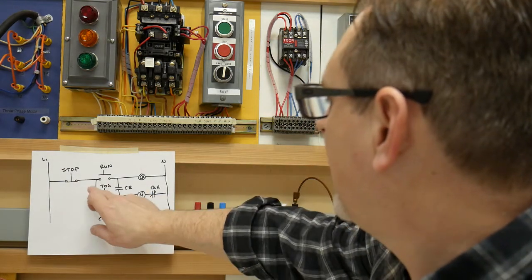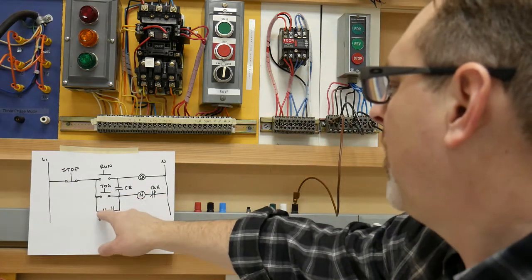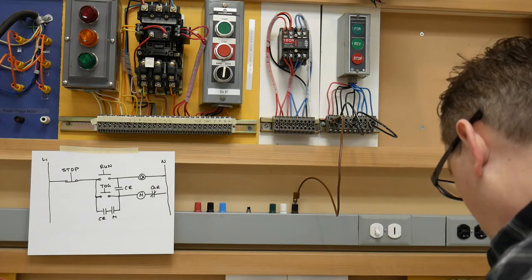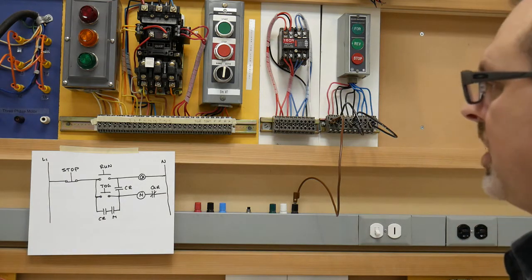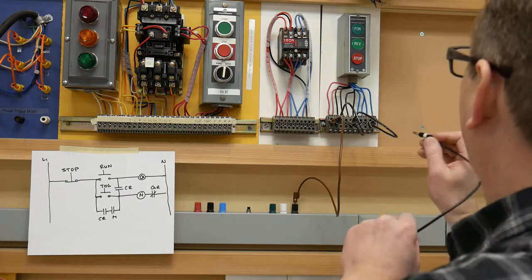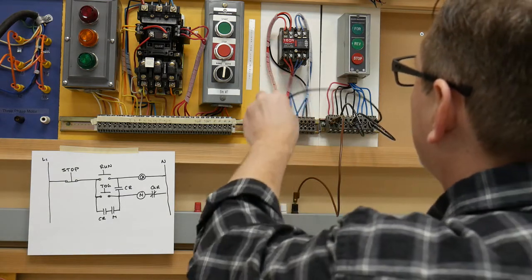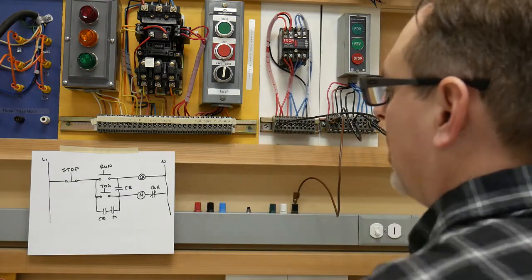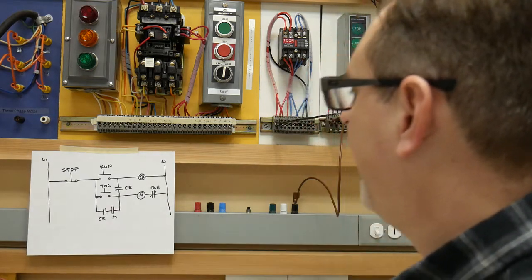So now I've got this wire in that wire in, and now we need to go to one side of the normally open control relay contact. So this one down here out of that same spot. So we're going to go to a normally open control relay contact. So that's that there.